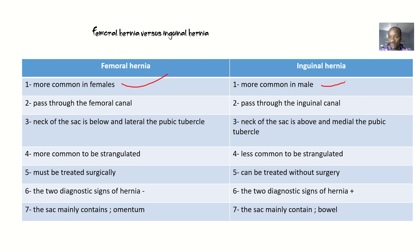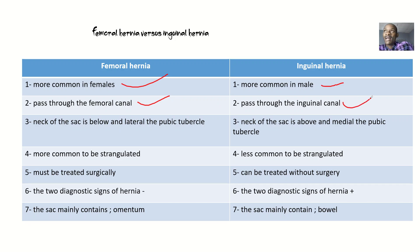Femoral hernia passes through the femoral canal, while inguinal hernia passes through the inguinal canal or through the abdominal wall.